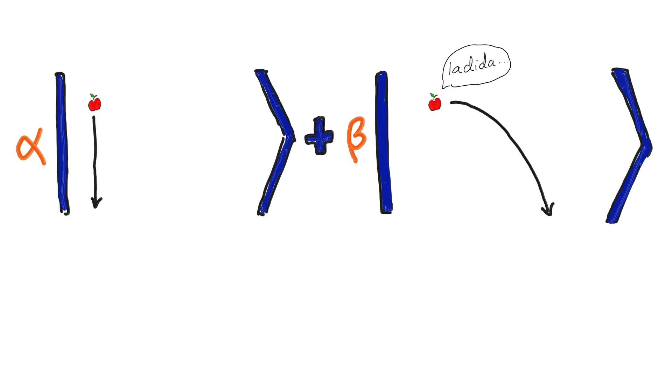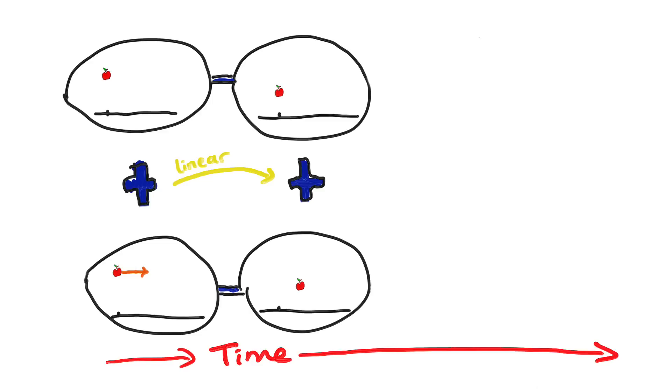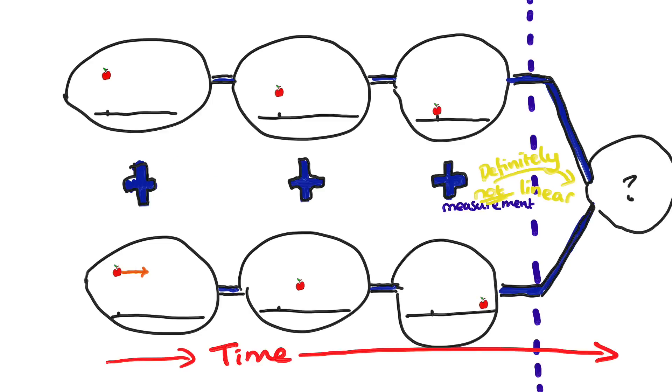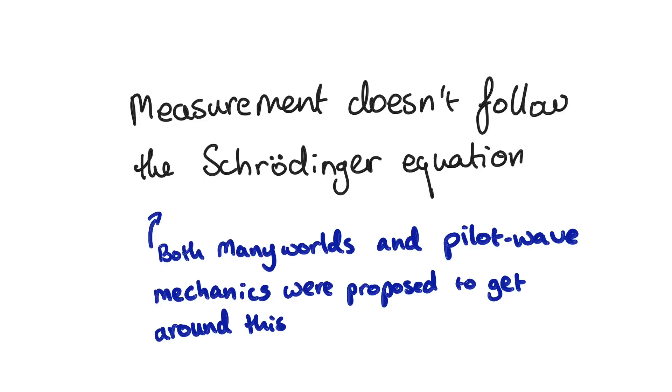Well, that is until measurement happens. When you measure, the branches of the superposition have the chance to interact with each other again. That's because measurement doesn't follow the Schrödinger equation. This fact that measurement doesn't obey the same rule that everything else in the universe is subject to is so bizarre, if not downright contradictory, that it has its own name. The measurement problem. And it's the biggest foundational issue in quantum mechanics.